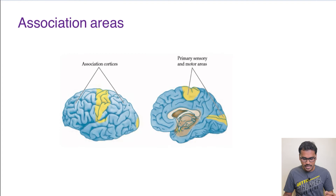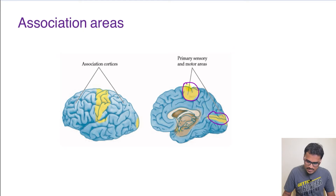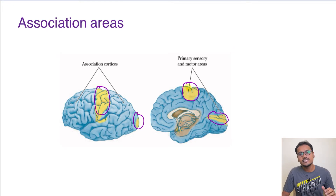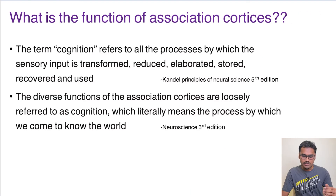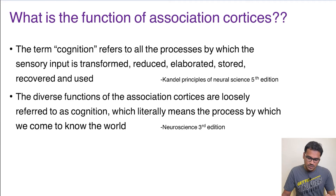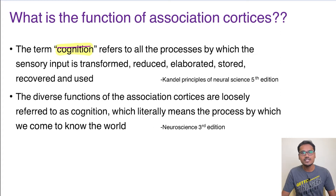Looking at a diagram, the yellow-shaded regions represent the primary sensory and motor areas — they are very small. The entire blue region represents the association cortices, which make up the vast majority of the brain. This tells us that the association areas have a very important role. In one sentence, their most important function is cognition.